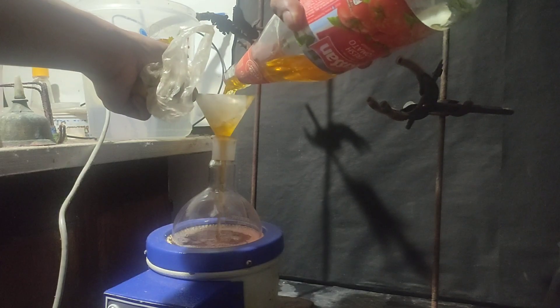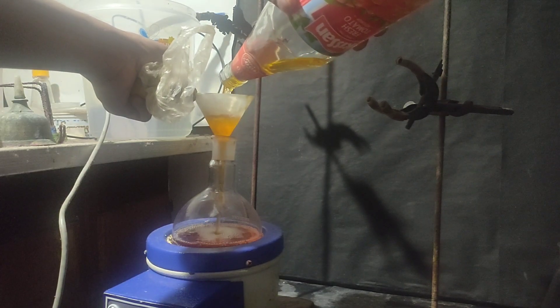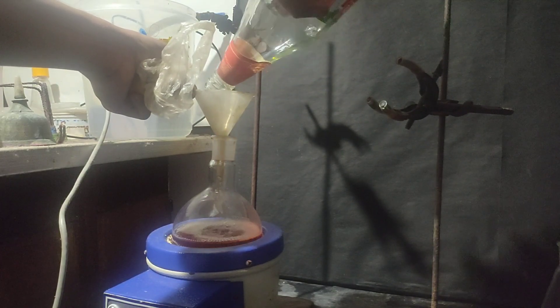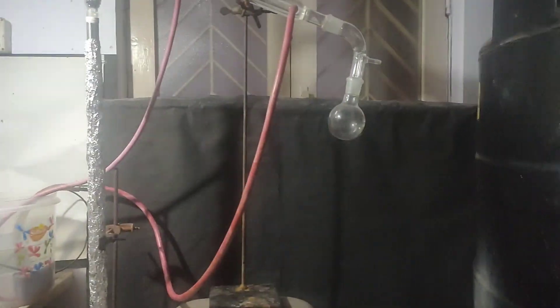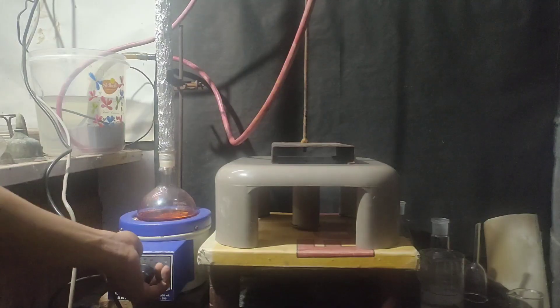So I pour 250 ml petrol in a round bottom flask and set it on fractional distillation using my DIY fractionating column. I have already uploaded a video on it.